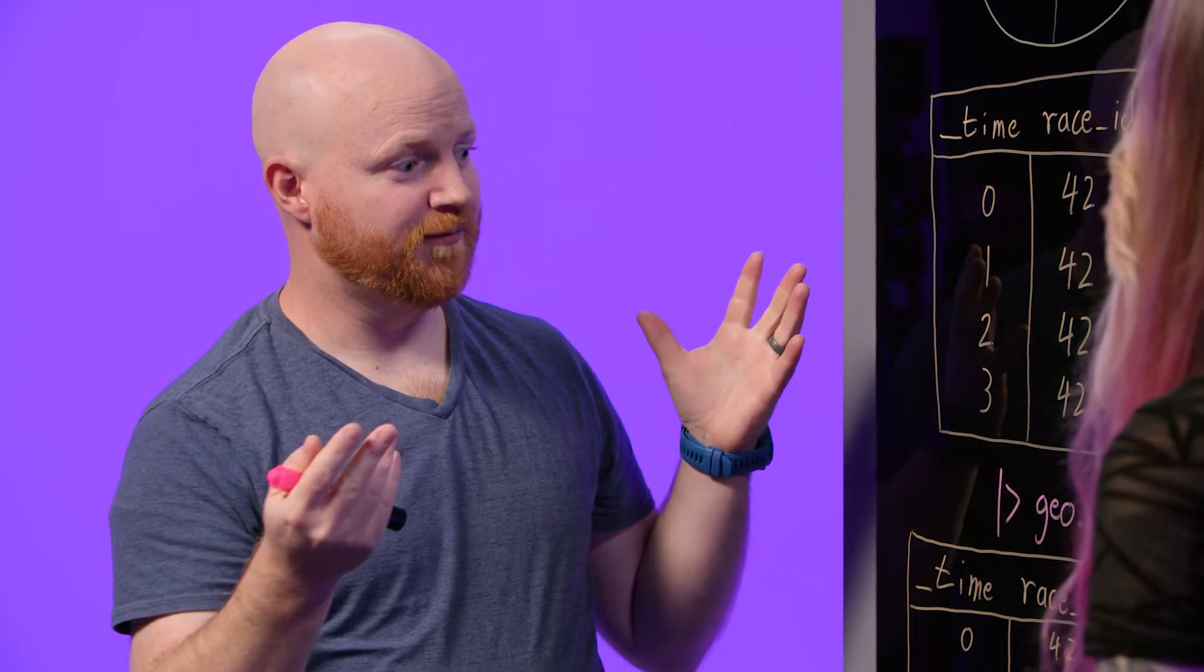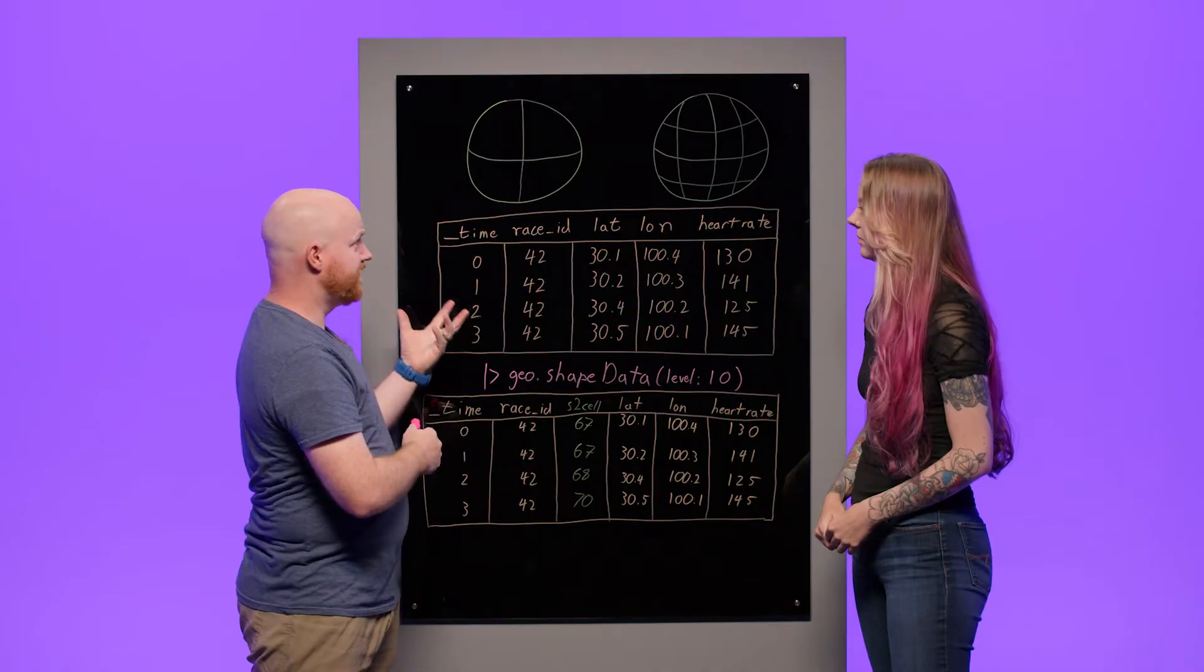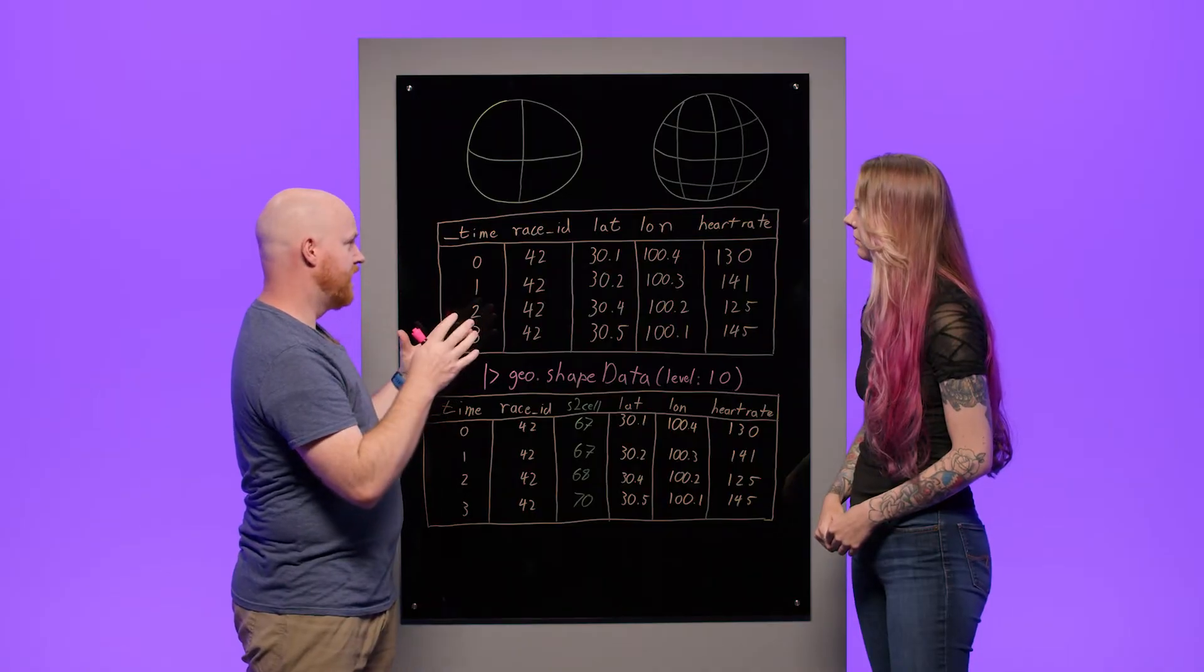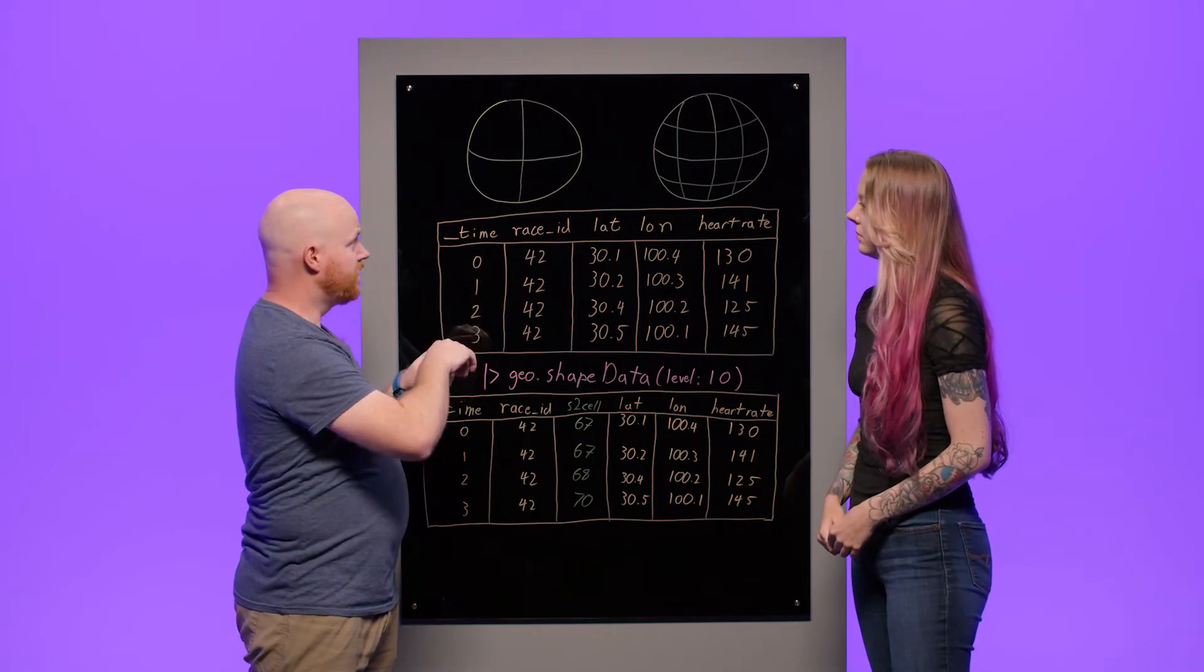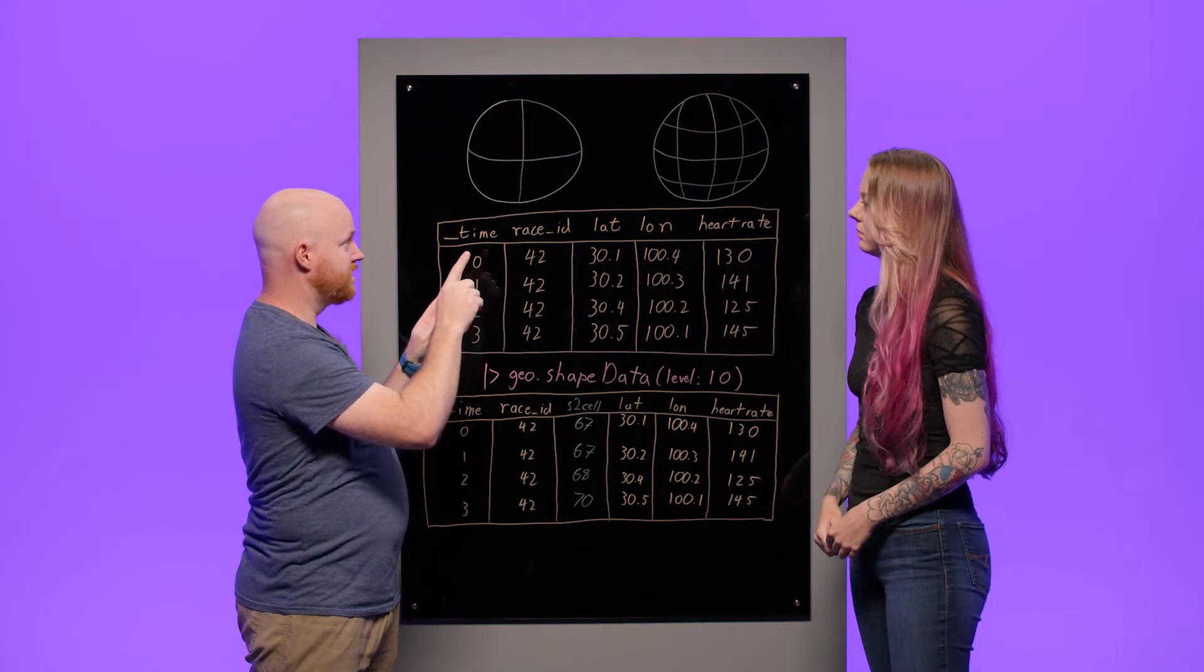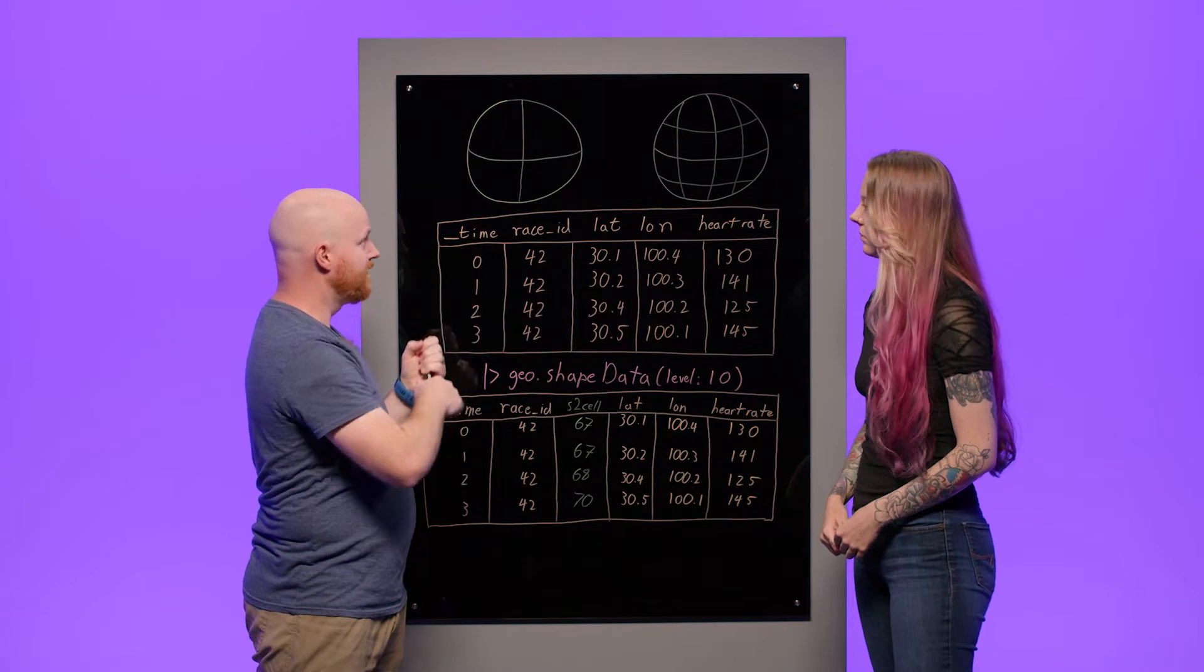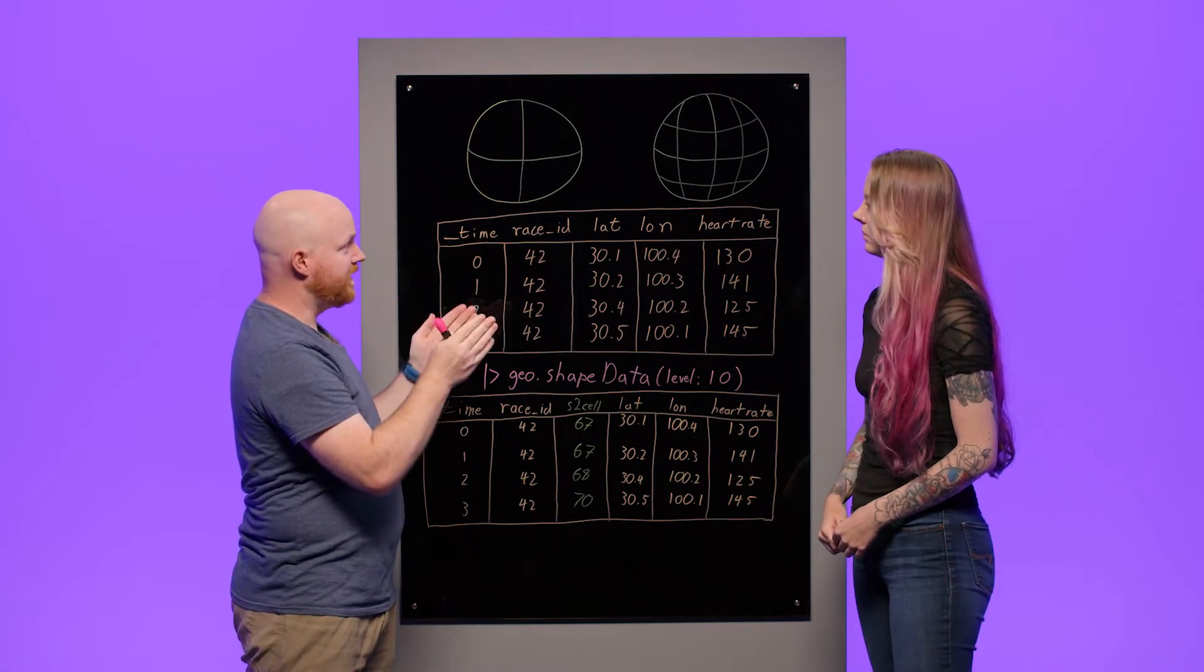So what makes S2 different from other systems? Yeah, so other systems will take the world and they'll project it onto a flat piece of paper, into a plane. And that will create weird gaps in seams where sometimes the cell lines don't line up. And so what S2 does that's different is it leaves things on a sphere. And it draws its cell lines on the surface of a sphere. And so the way they do their math is every edge of a cell is the shortest path between those two points on the cell. And that way you know that all the cells are lining up nicely and have no seams or gaps.